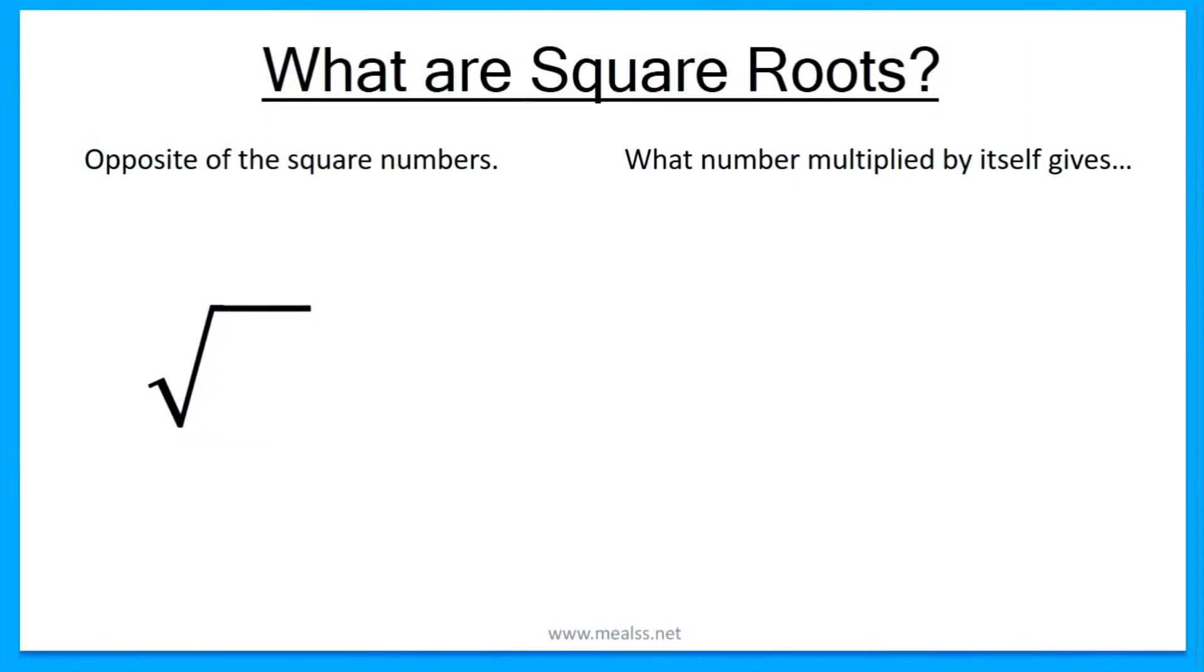Moving on to square roots. So what are square roots? Square roots are basically the opposite of square numbers. Now this is a square root sign, it's also known as a radical.